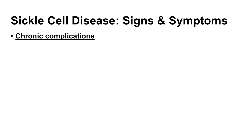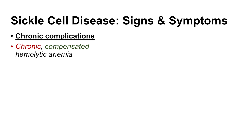What are some of the chronic complications of sickle cell disease? Essentially the biggest complication is chronic compensated hemolytic anemia. It's a long-term process — the body attempts to compensate for the chronicity of the anemia. Hemolytic essentially means the body is destroying the red blood cells. This leads to these individuals having chronically low levels of hemoglobin, usually from anywhere from 60 to 90 grams per liter.